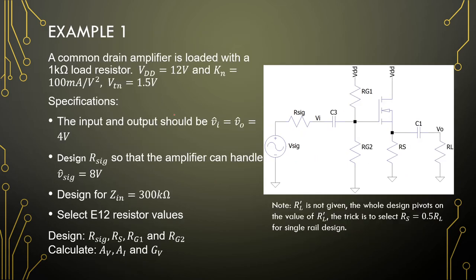Example 1: we have a common drain amplifier loaded with a 1 kΩ resistor, VDD of 12 V, transconductance parameter of 100 mA/V², and a threshold voltage of 1.5 V. The peak input and output should be 4 V. We should design a signal resistor so the amplifier can handle 8 V at the input, and RG1 and RG2 are designed for an input impedance of 300 kΩ.